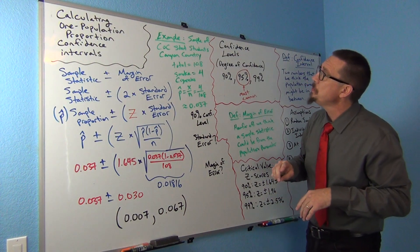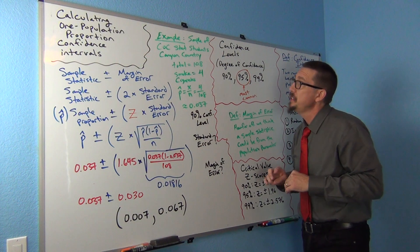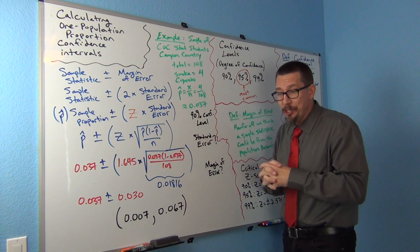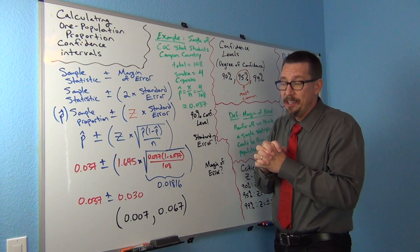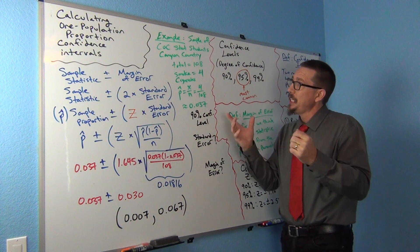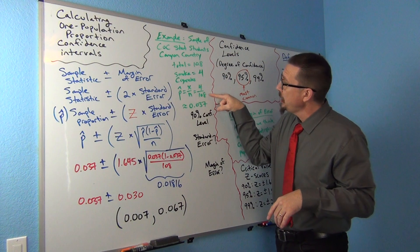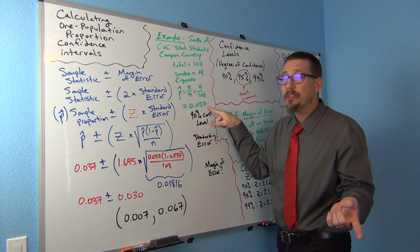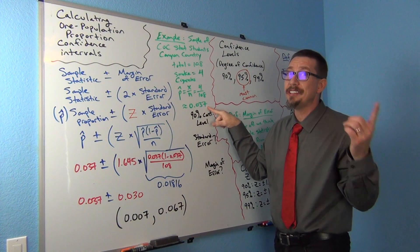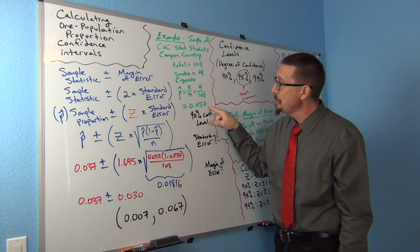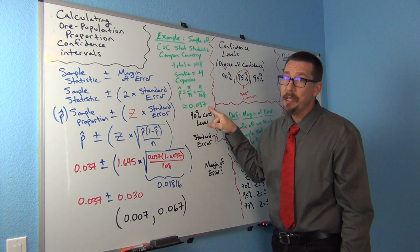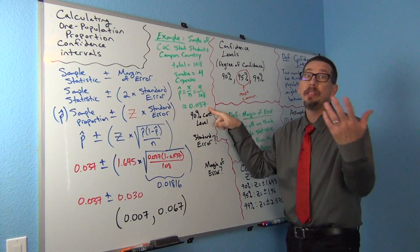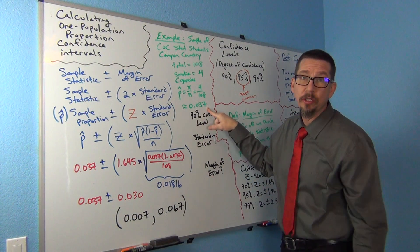Let's look at this example. We have a sample of COC STAT students from the Canyon Country campus — a total of 108 in the sample, and four of them smoked cigarettes. The question is: what percentage of Canyon Country students actually smoke cigarettes? Well, I could calculate the sample proportion: 4 divided by 108 is about .037. But does that mean the population percentage is .037? No — this number is going to be off from the population percentage. There's going to be a margin of error, so .037 is probably not the actual population percentage. What could the population percentage be? That's what the confidence interval is going to answer.